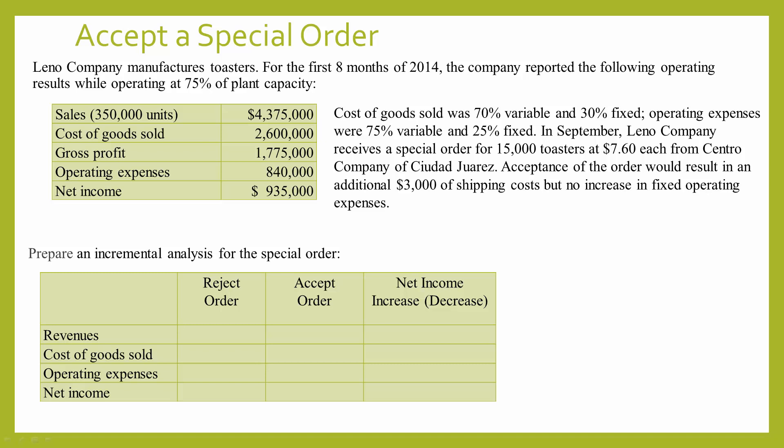In September, Leno Company receives a special order for 15,000 toasters at $7.60 each. Acceptance of the order would result in an additional $3,000 of shipping costs, but no increase in fixed operating expenses.